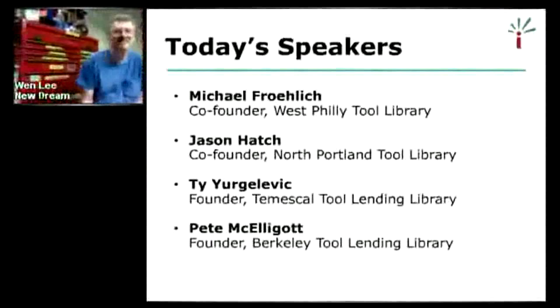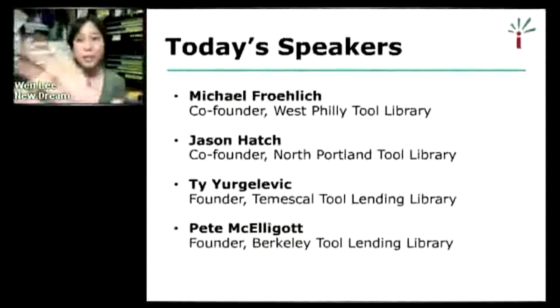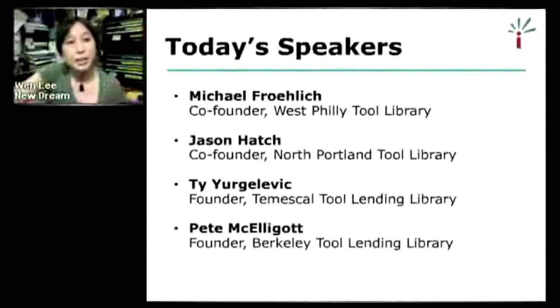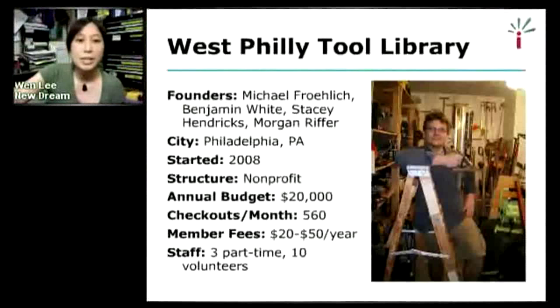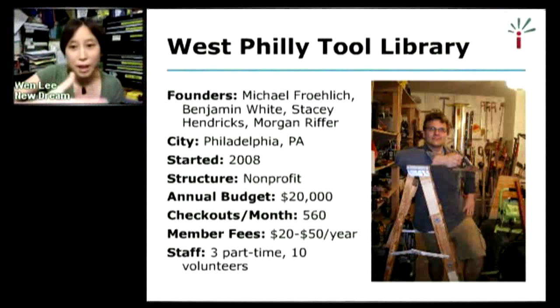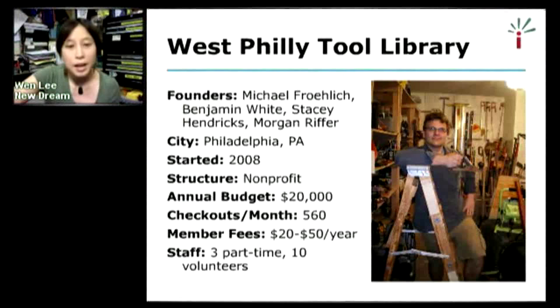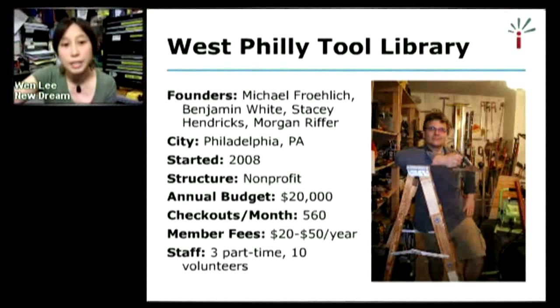All four of them are going to have a chance to speak, and we're going to see some snapshots of what these four tool libraries are like today. The West Philly Tool Library is in Philadelphia, Pennsylvania, started in 2008. It is a nonprofit with an annual budget of about $20,000 a year, about 560 tool checkouts per month. Members pay a sliding scale fee of $20 to $50 a year. They have three part-time staff and about 10 volunteers.